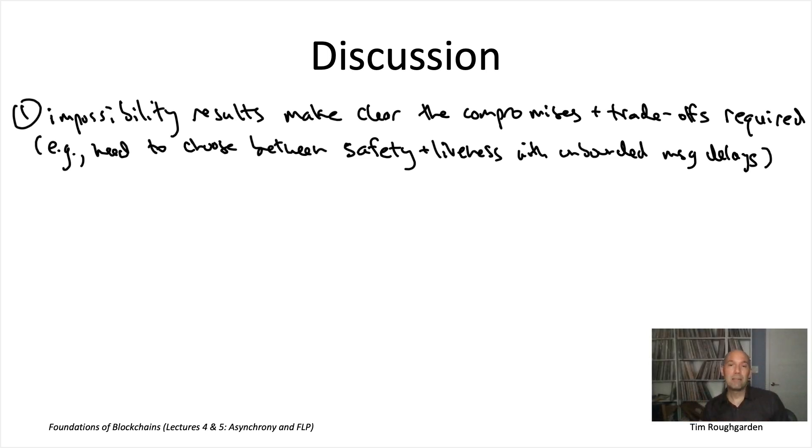Without the background provided by these lectures, you might look over the landscape of layer one blockchain protocols and be like, why doesn't some smart person just put together a protocol that rules them all, that even in the presence of asynchrony, enjoys both consistency and liveness? And the FLP result tells us no, it's not that no one's been smart enough yet. It's not that we just need to wait a few more years and there'll be some innovation where we get everything we want.